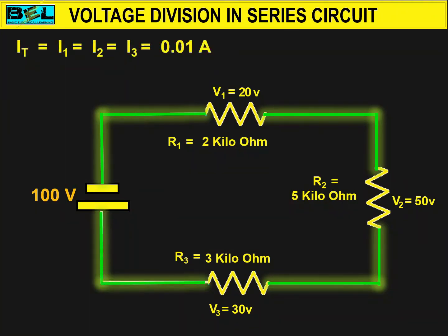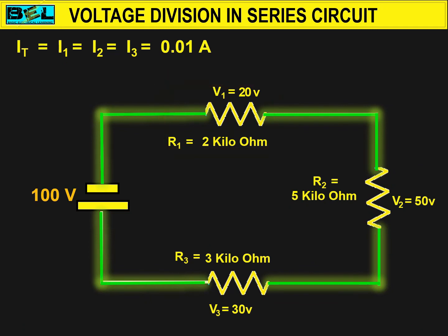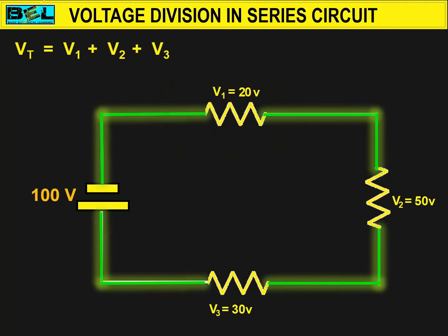One thing that must be noted: a resistor with a higher resistance value will drop more voltage, and a resistor with lower resistance will drop less voltage. Here is the equation of voltage for the circuit. By placing all the values of voltage into the equation, we found that the total applied voltage is equal to the sum of all the voltage drops in the circuit.